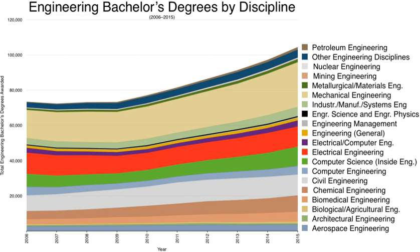In Denmark, engineering degrees are delivered by either universities or engineering colleges such as Engineering College of Aarhus. Students receive first a baccalaureate degree, followed by a master's degree, according to the Bologna Declaration. The engineering doctorate degree is the PhD, requiring three years of studies. Danish engineers, especially from engineering colleges, are praised for being very practical — skilled at physical work — owing to the high quality of apprenticeship courses.